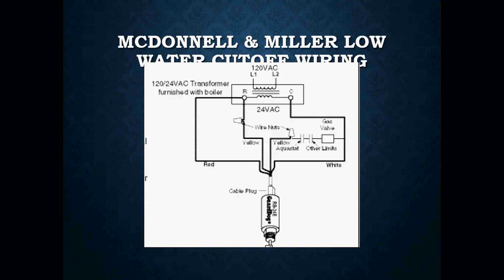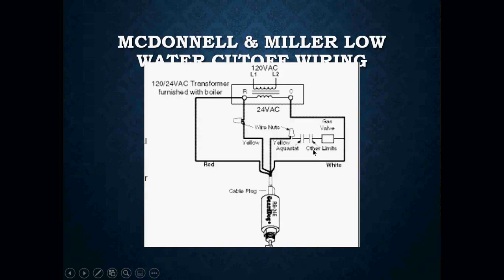Here's the wiring for your McDonnell Miller low water cutoff — usually they are powered with 24 volts. Your low water cutoff is wired in with your aquastat and your other limits on this particular burner. In this case, this is apparently a gas-fired boiler, so we will have other types of limits — first-out switches, high limit switches, flame detection devices, and all sorts of other safety devices wired in series with your low water cutoff and your aquastat.